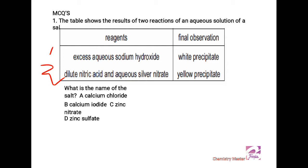What are the options here? Calcium chloride, calcium iodide, zinc nitrate, and zinc sulfate. Now we have to look at what reactions are given. Excess aqueous sodium hydroxide is going to give us white precipitate, so hydroxide is going to combine with a cation of metal present in the salt. Calcium makes white precipitates, zinc also gives us white precipitates when it combines with hydroxides.